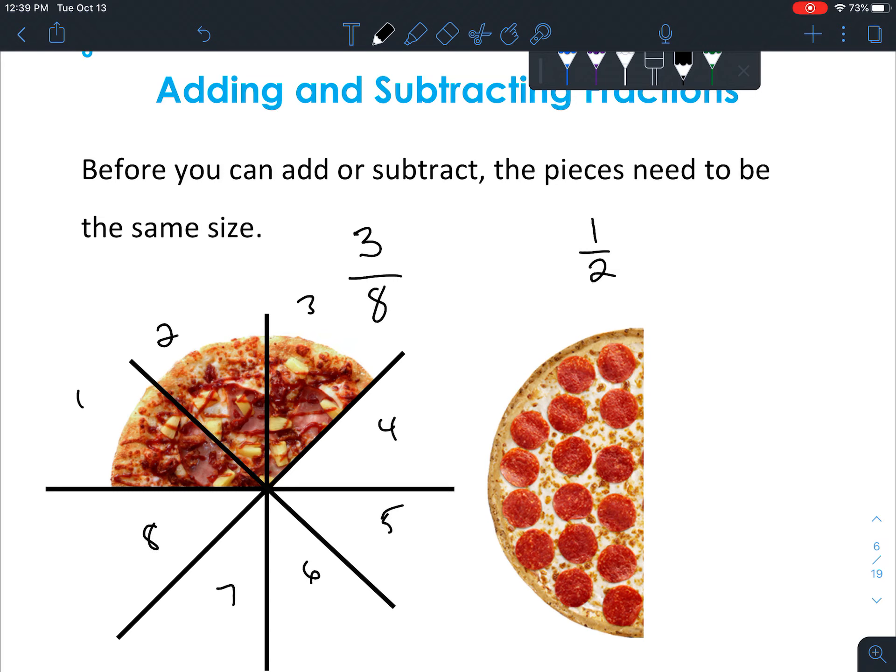Okay, so if you were to just add one half to that, you're not just adding one piece. It's hard to add together until you convert the one half. So let's just cut this a little bit more. Oh, that's a little crooked. So let's imagine if this pizza were a whole pizza, and we cut it into the same size.